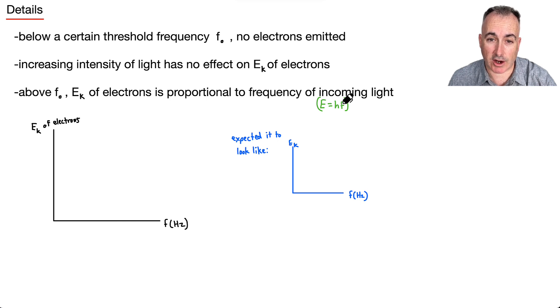In other words, if I'm graphing the kinetic energy of the electrons, I would expect that this graph here should look like this, some sort of graph like this. And yet, that's not what we see.